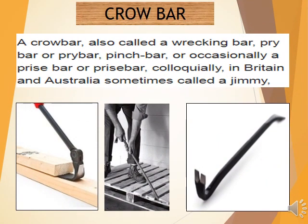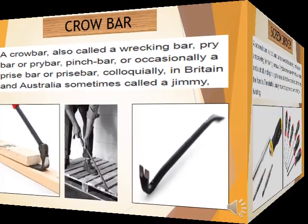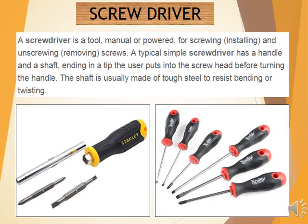The crowbar, also called a wrecking bar, pry bar, or pinch bar, is colloquially called a jimmy in Britain and Australia. The screwdriver is a tool — manual or powered — for screwing and unscrewing screws. A typical screwdriver has a handle and shaft ending in a tip that the user puts into the screw head before turning the handle. The shaft is usually made of tough steel to resist bending or twisting.